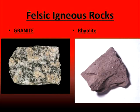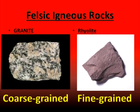Granite has crystal grains that are visible — you can see individual pieces in the rock. Whereas rhyolite does not have visible crystal grains. So with this, we can further divide felsic igneous rocks into whether they are coarse-grained or fine-grained. This helps us describe what the rock looks like even more. A full description of granite would be that it is a coarse-grained, felsic, igneous rock. And rhyolite is a fine-grained, felsic, igneous rock.